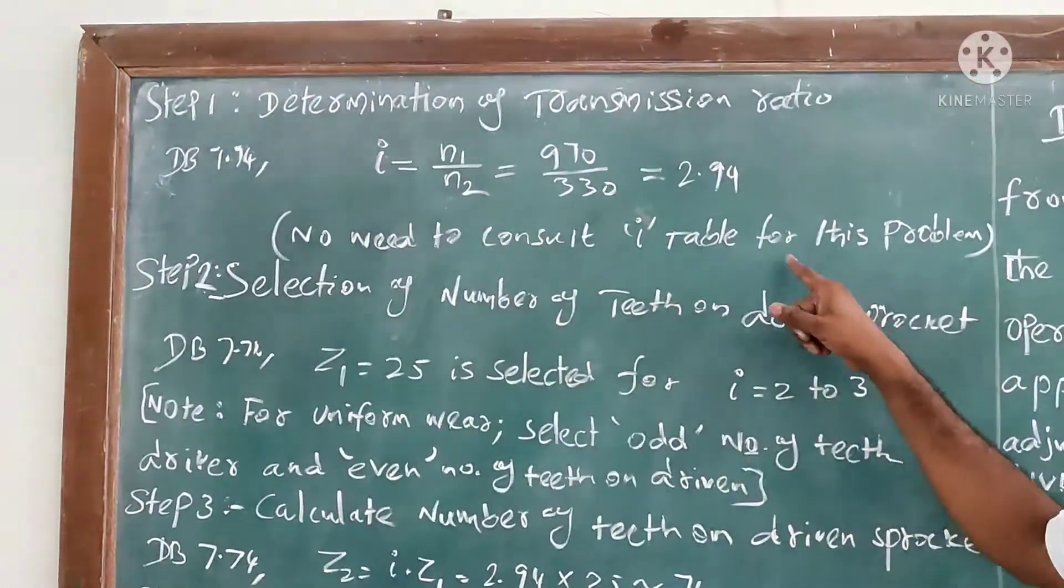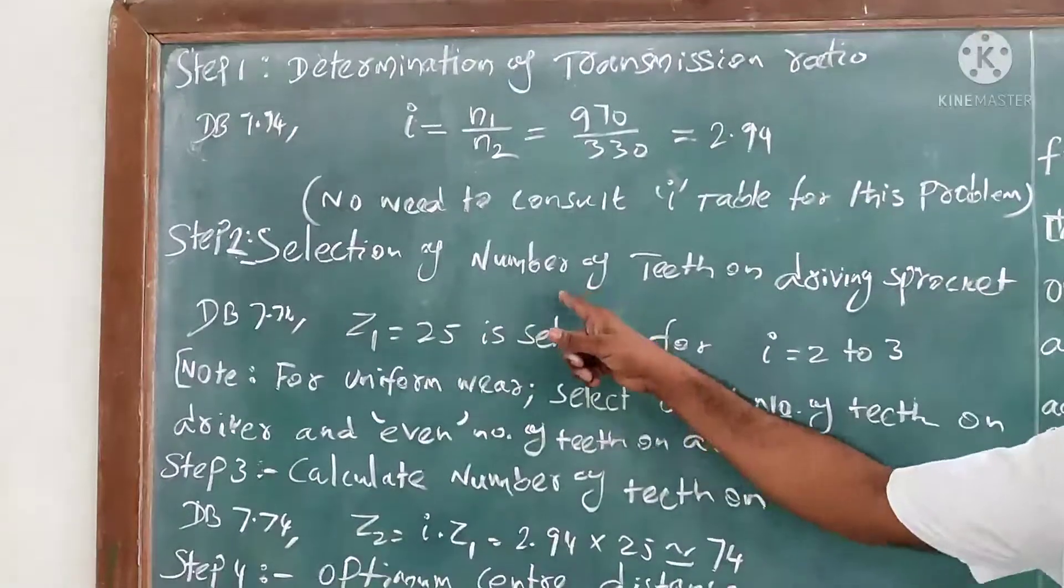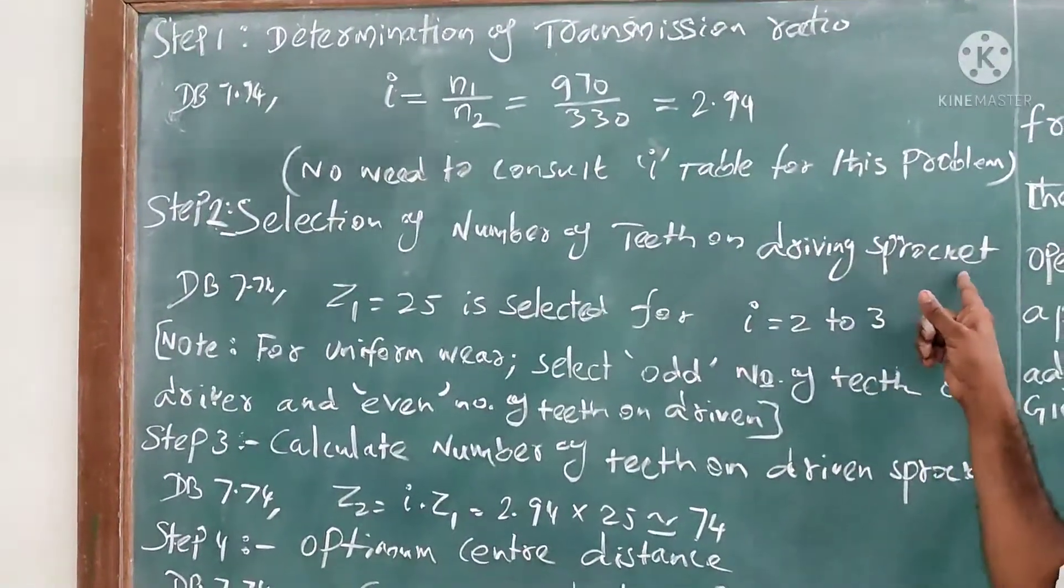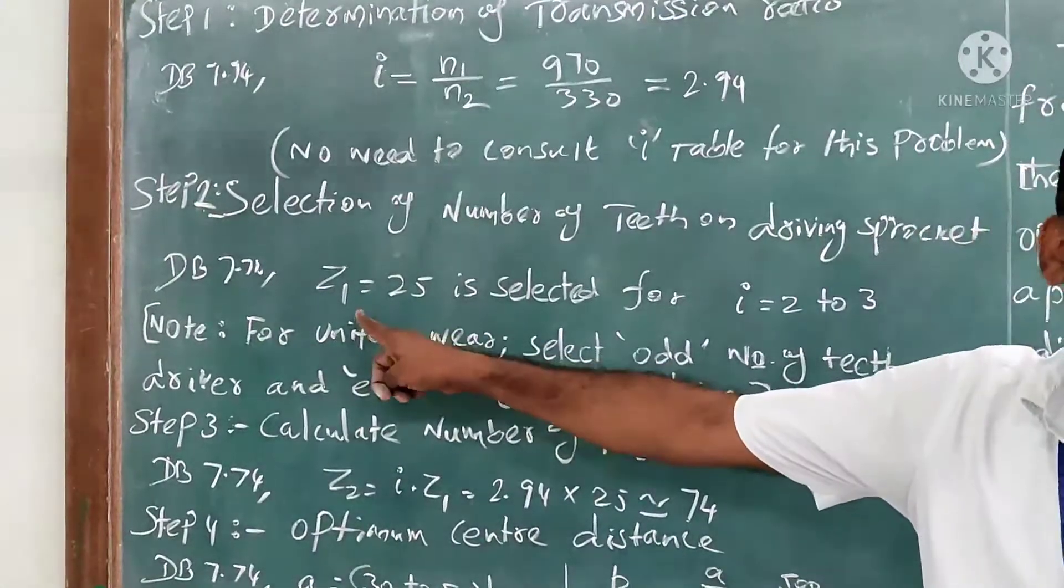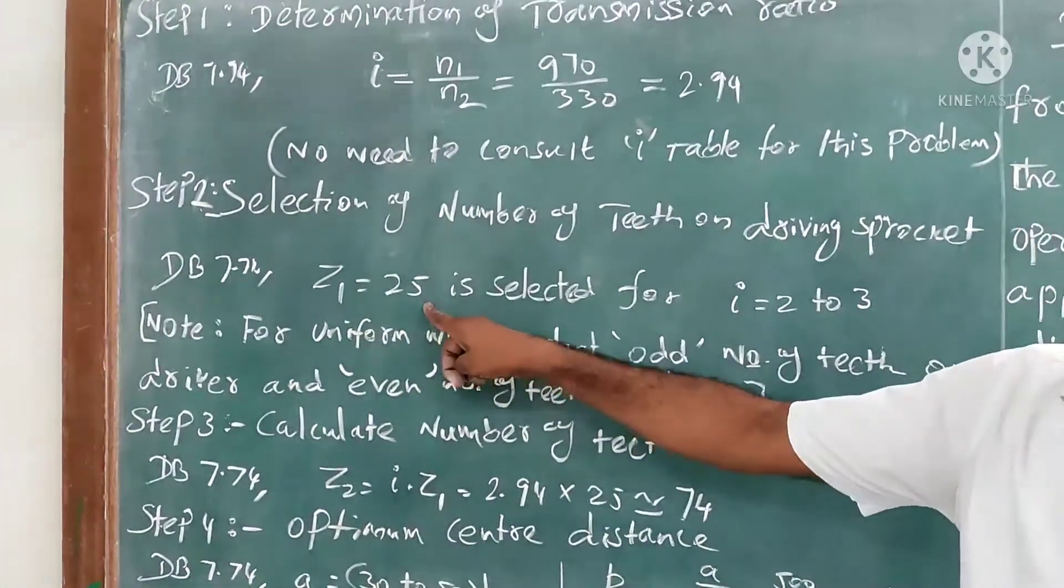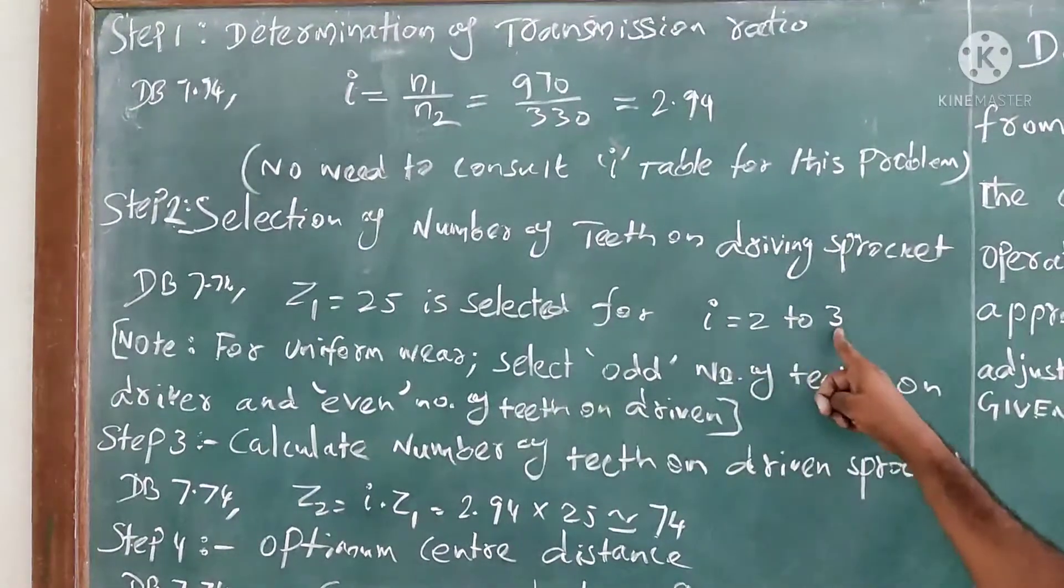Since the problem is given the values directly, no need to consult the i table for this problem. Step number two: selection of number of teeth on driving sprocket. From data book page number 7.74, z1 = 25 is selected for i between 2 to 3.